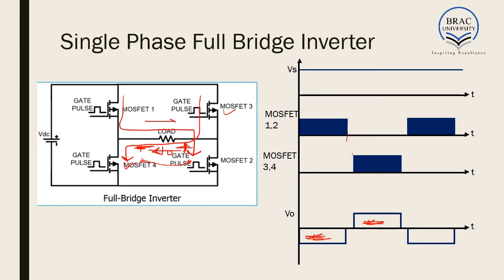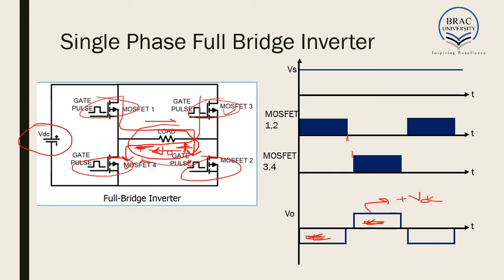Dead time is introduced here as well for practical purposes, but for theoretical calculations we consider no dead time. The advantage of the full-bridge inverter is that there is no external resistance in the circuit, so the switches are lossless with no voltage drop. The entire voltage VDC is dropped across the load. We get plus VDC and minus VDC, giving a voltage swing from minus VDC to plus VDC. In practice, MOSFETs have a very small on-resistance, so this barely affects circuit operation.